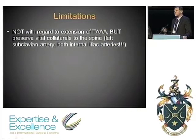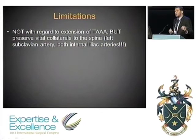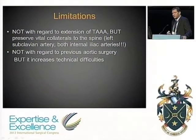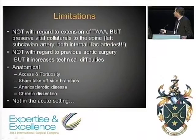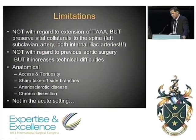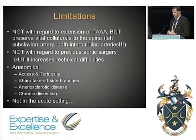Are there limitations? Of course. With regard to the extent of thoracoabdominal aneurysm, it is very important to preserve collateral flow to the spine to avoid neurological complications — we take great care of the left subclavian artery and both internal iliac arteries. Previous aortic surgery certainly makes indication, planning, and execution more difficult, but it is possible. The usual anatomical limitations include access, tortuosity, sharp takeoffs, diseased vessels, and chronic dissection.